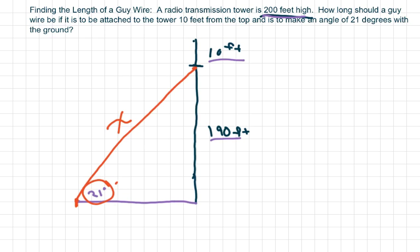So what we have: we have our angle and we have opposite and then hypotenuse. So this is our hypotenuse. Opposite over hypotenuse is your sine function. So we're going to do sine of 21 degrees equals 190 over x. X is going to be our guy wire here.